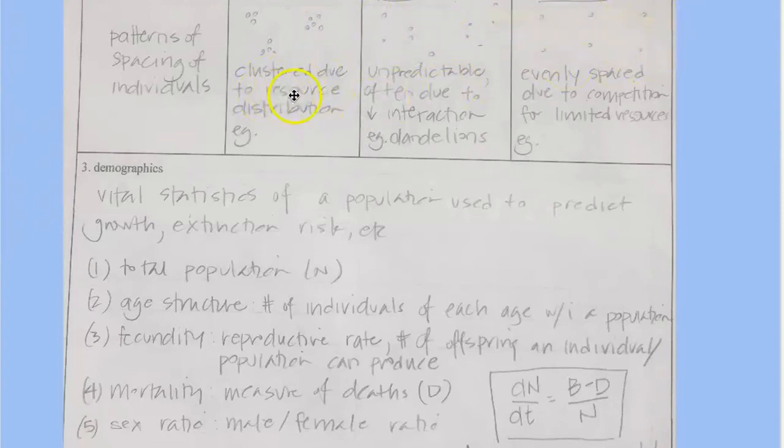Sometimes it's totally random and sometimes it's uniform. There's even spacing. So organisms that are clumped, clustered due to resource distribution,